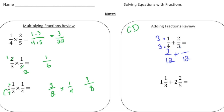Now here, three times four gives you 12, so I'm going to multiply the two times the four, and that's going to be eight. So now we have three-twelfths plus eight-twelfths, which adds up to eleven-twelfths, because once you have common denominators, you just add the numerators.